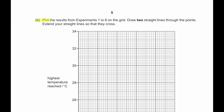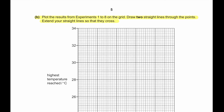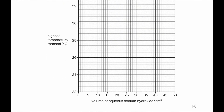Part B. Plot the results from experiments 1 to 8 on the grid. Draw two straight lines through the points and extend your straight lines so that they cross. On the x-axis we have the volume of aqueous sodium hydroxide, and on the y-axis we have the highest temperature reached.